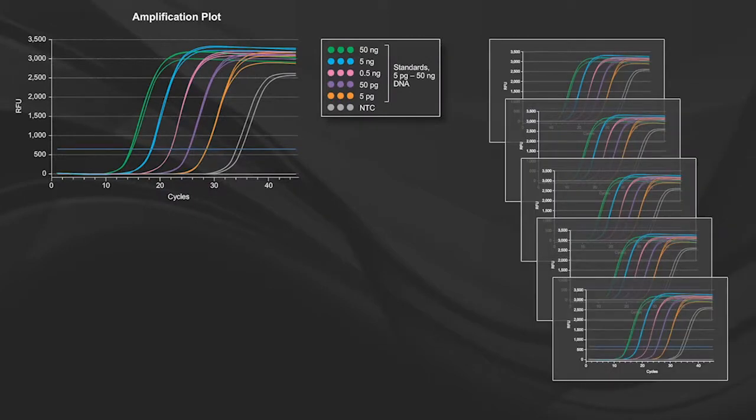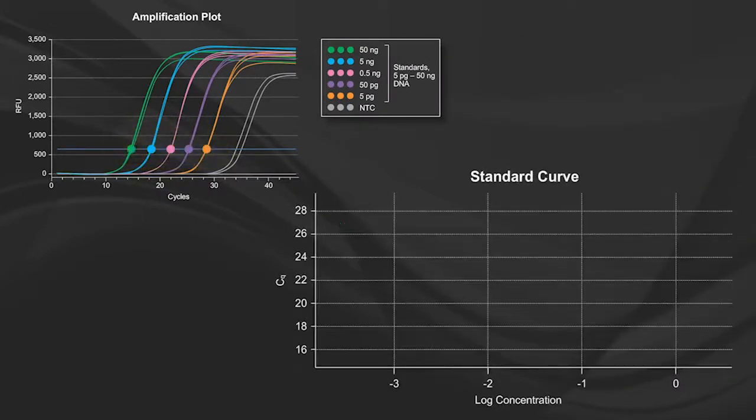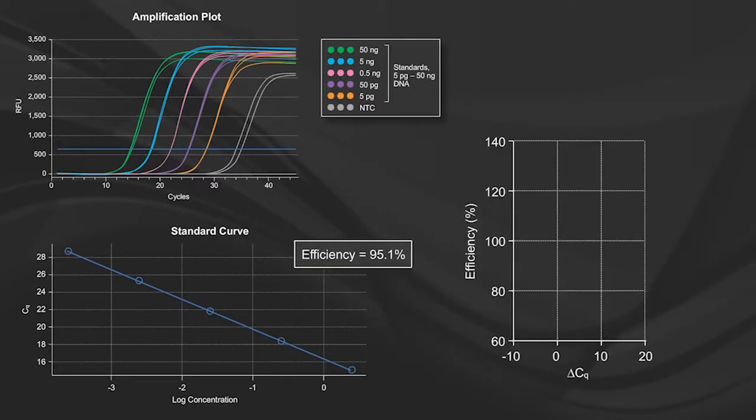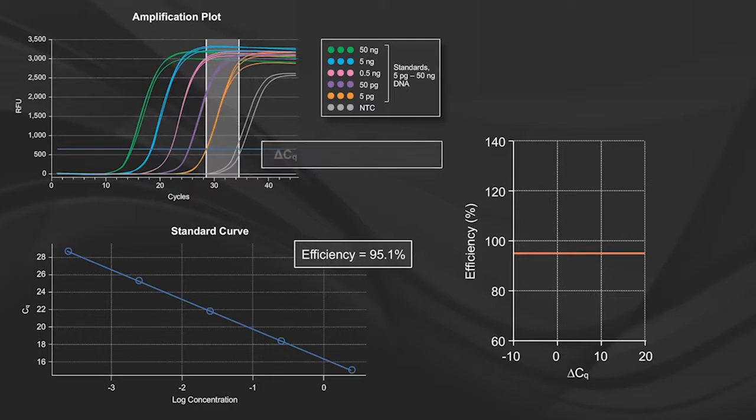Because this dataset became quite large, we needed to create a better, more scalable way to visualize our results. We started by plotting the calculated efficiency of the standard curve against the delta cq, which is the distance between the last template dilution and the no-template control, thereby translating the 18 wells worth of data per target into a single dot.